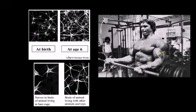Here are just a couple of examples. This first one shows how the human brain develops in early childhood. This is a depiction of the neurons in a brain at birth.